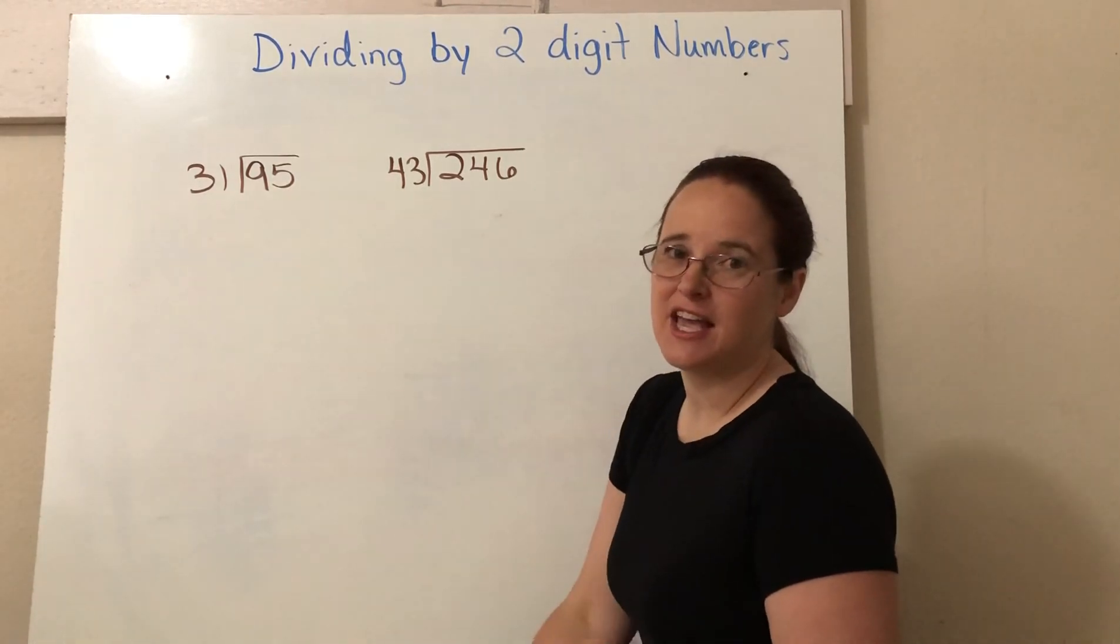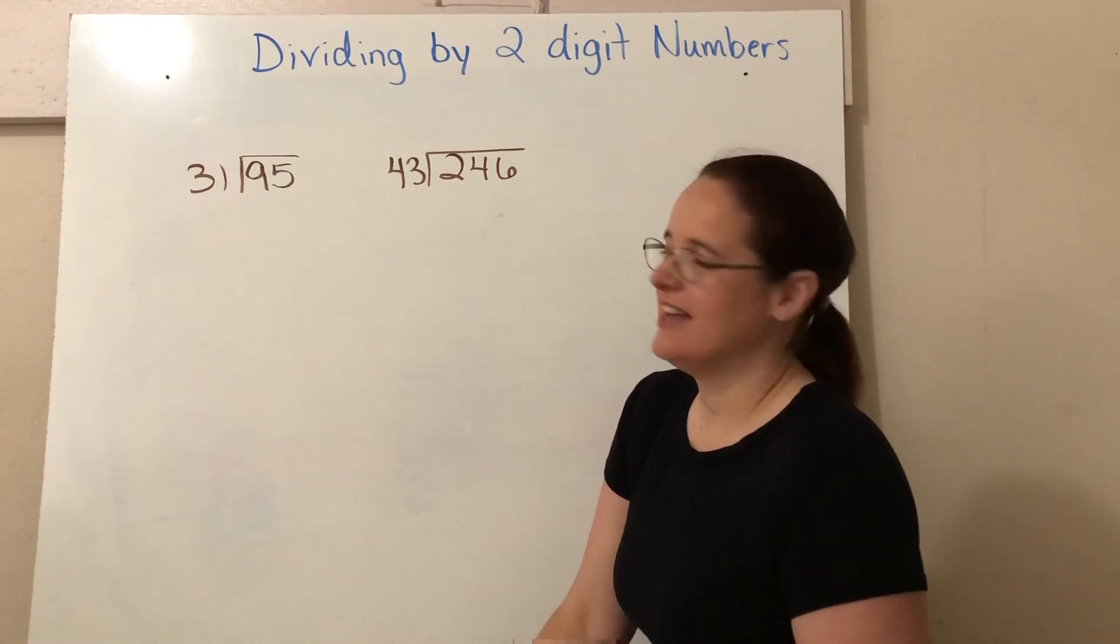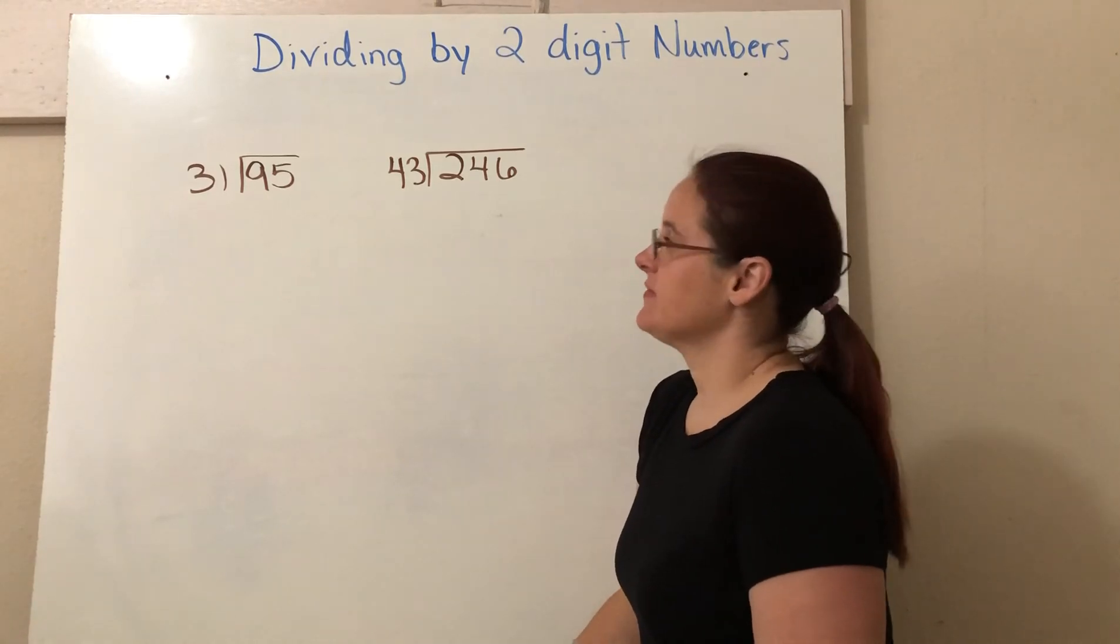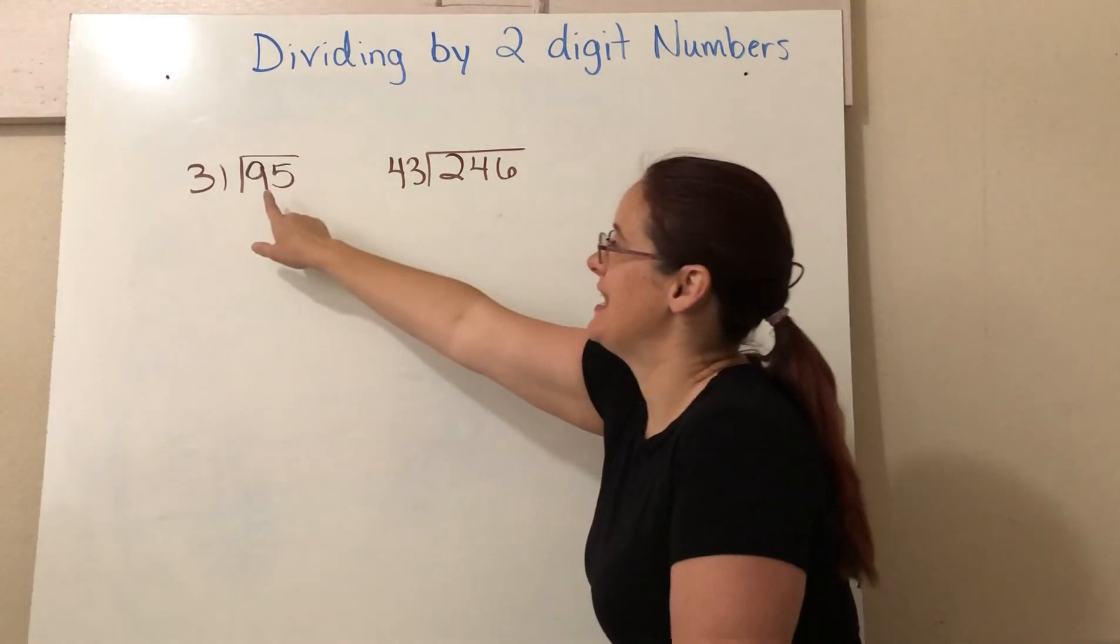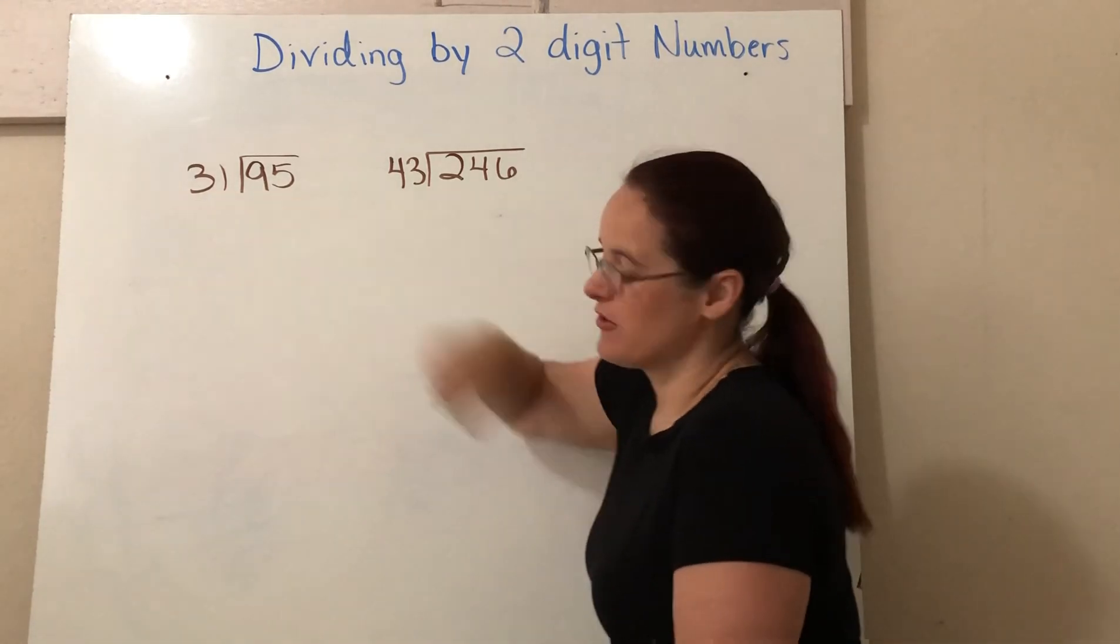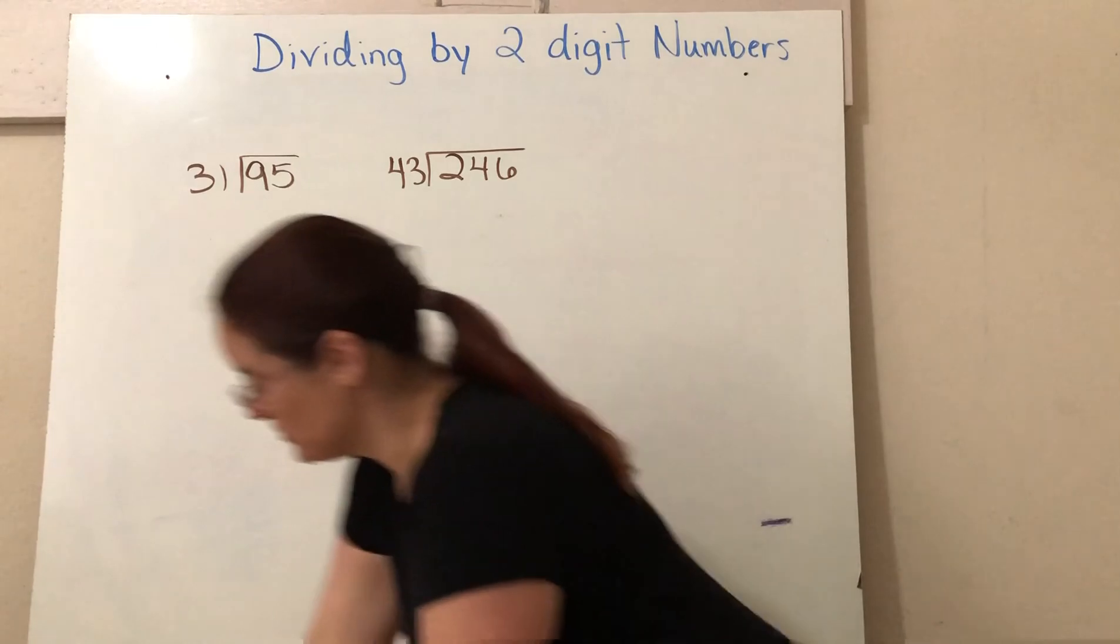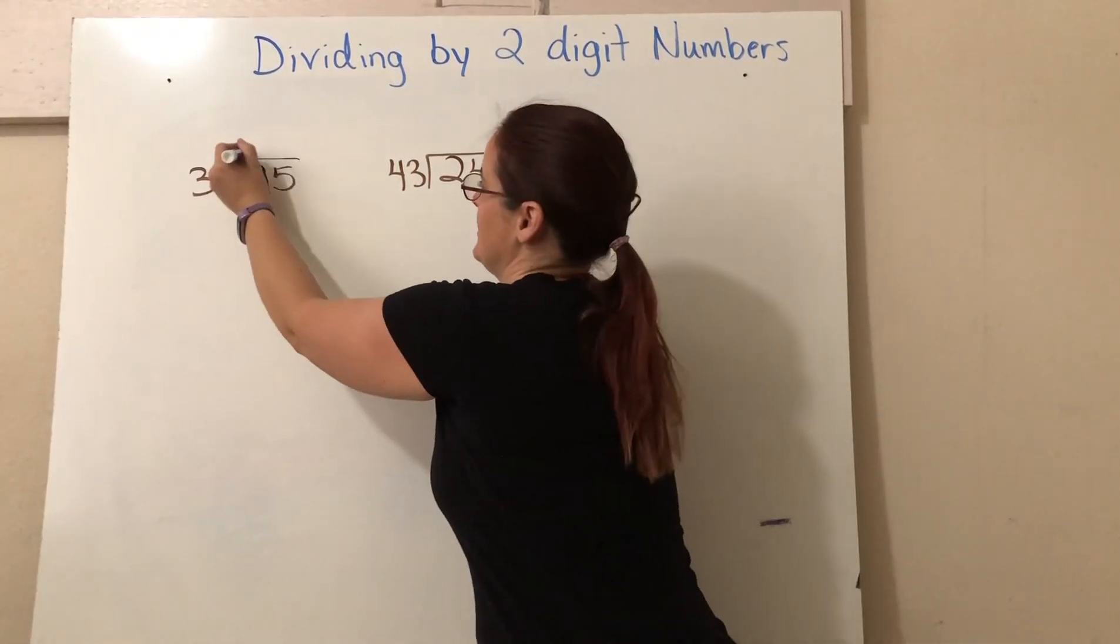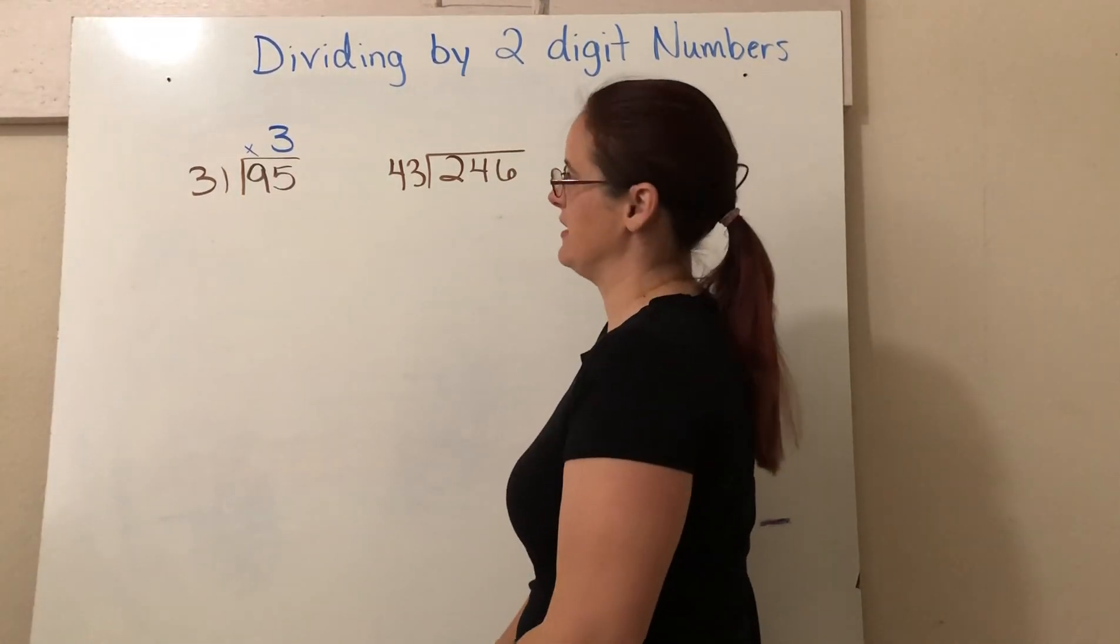I could in this case, but we're going to have some problems that is like, oh my gosh, I don't want to count by that. So I'm going to teach you with these simple problems how to use estimation. So I know that 30 goes into 90 three times. So I'm going to guess that 31 probably goes into 95 three times too. So I'll start with that. 30 is not going to go into 9. So I definitely want to put my x there and I'm going to guess three right there.